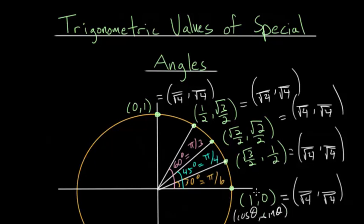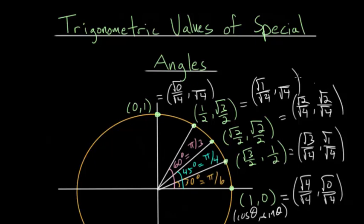The x value starts at one, so we start at the square root of 4, and counting down we go root 3, root 2, root 1, and root 0. The sine function, or the y values, does the opposite — they count upward: root 0, root 1, root 2, root 3, and root 4. You can see that all of these simplify to the standard trig values.